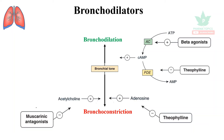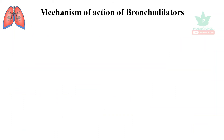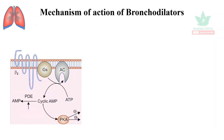Apart from this, muscarinic antagonists are available as bronchodilators. Theophylline has an additional action of blocking adenosine receptors, which ensures an anti-inflammatory effect. All these mechanisms lead to bronchodilation and ensure better breathing. These bronchodilators are available as inhalers, nebulizers, and rotahalers.